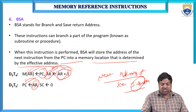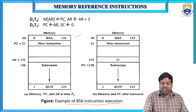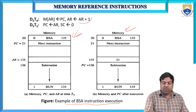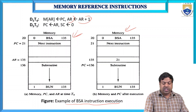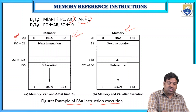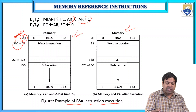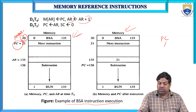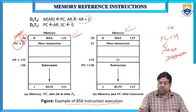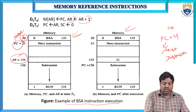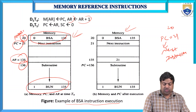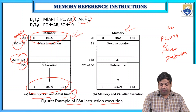For example, at present instruction address 20, PC = 21 (next instruction), and AR = 135. After BSA execution: AR = 136, and the return address (PC = 21) is saved at memory location M[AR = 135]. Memory and program counter states before and after execution illustrate the branch and save return operation.